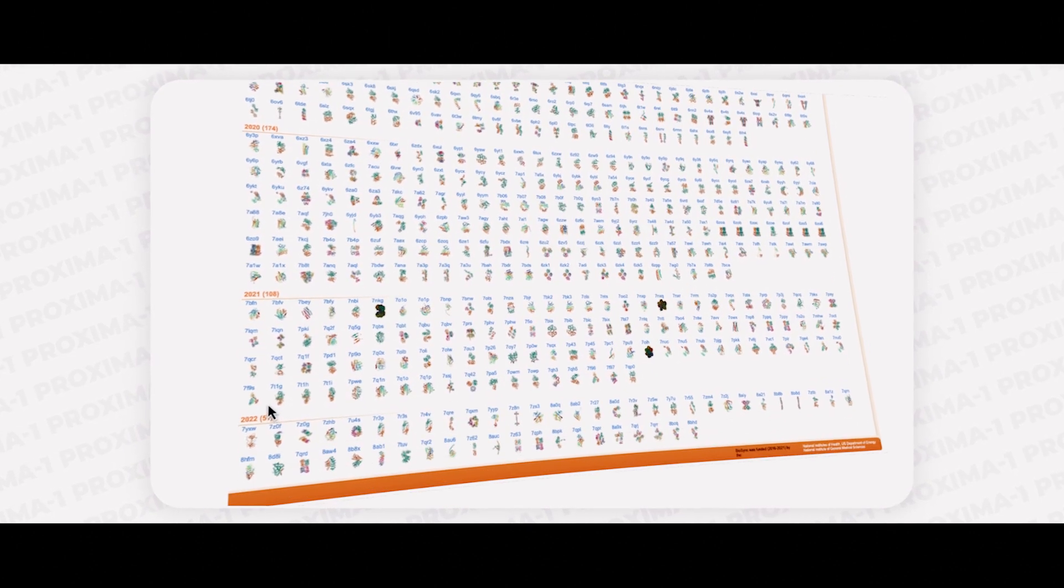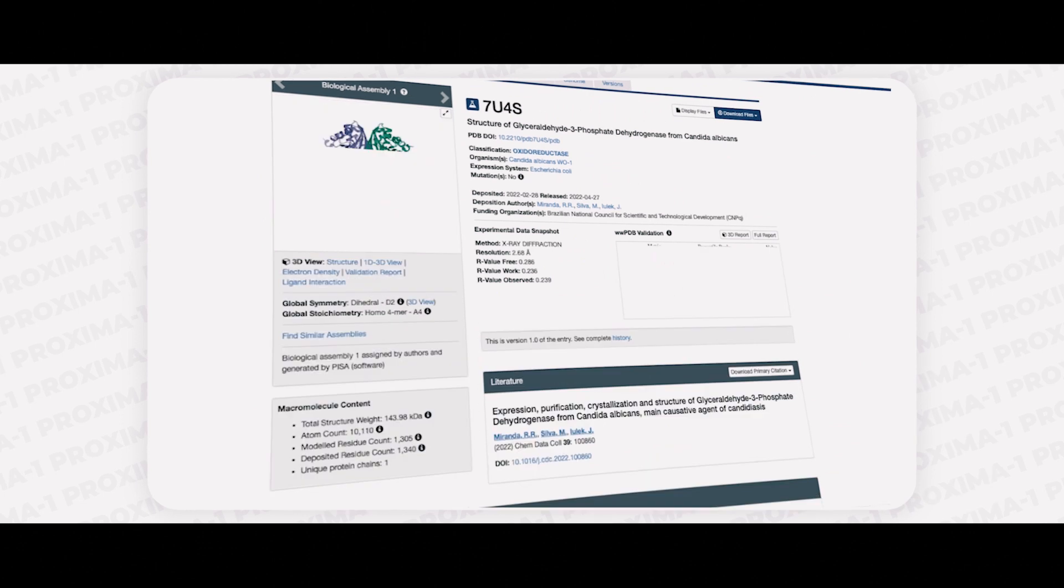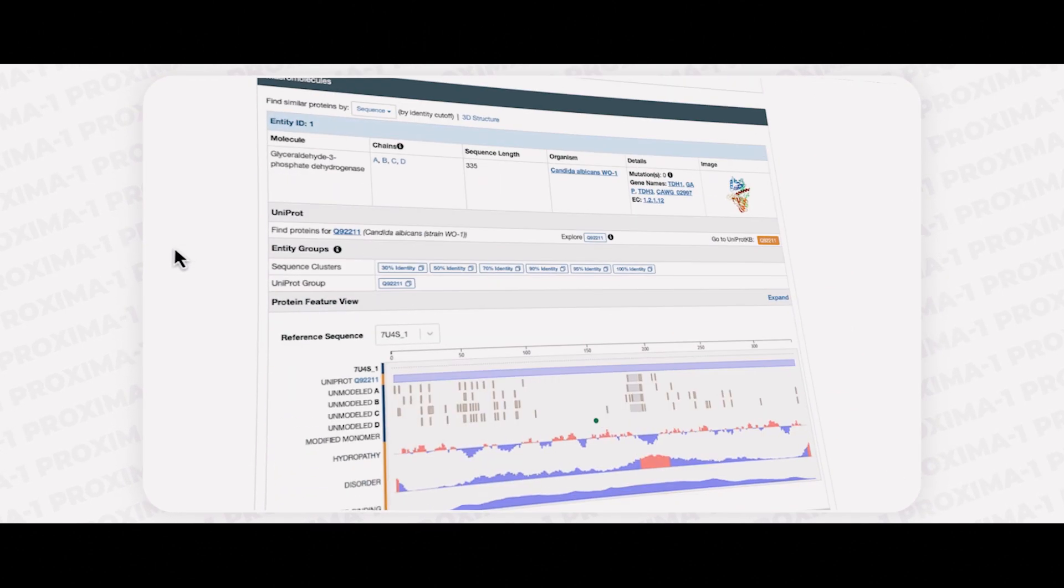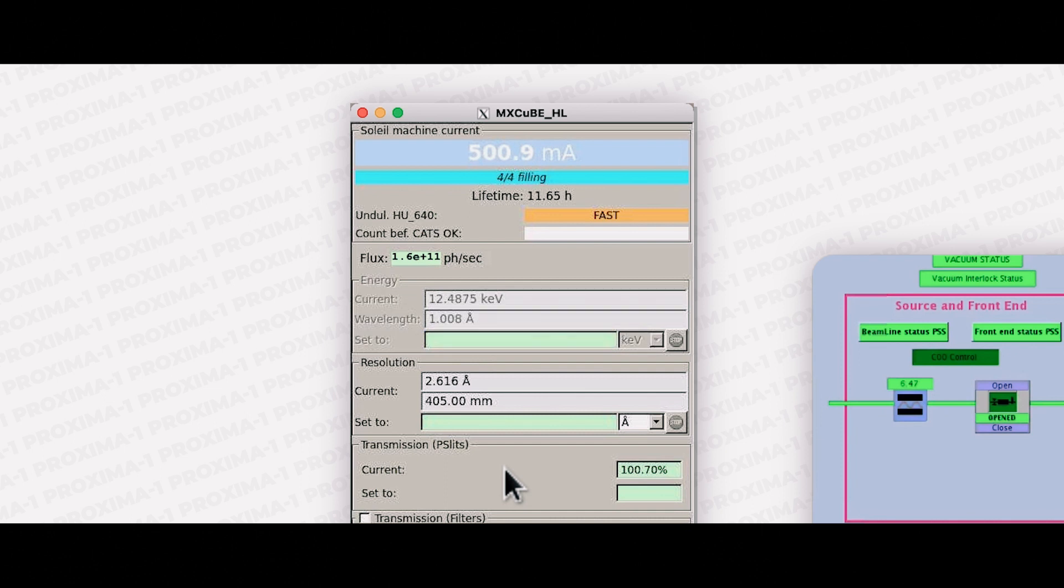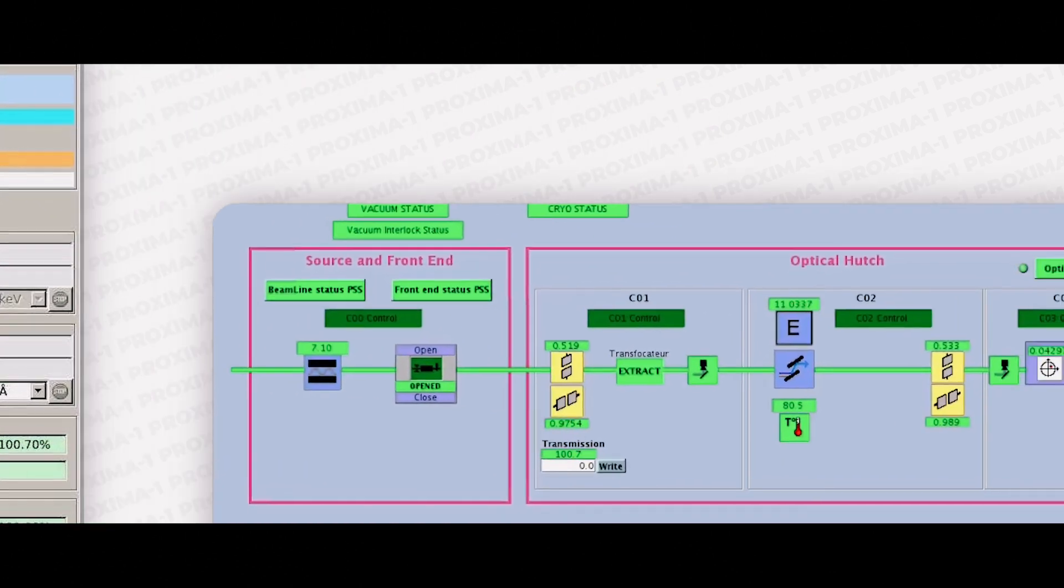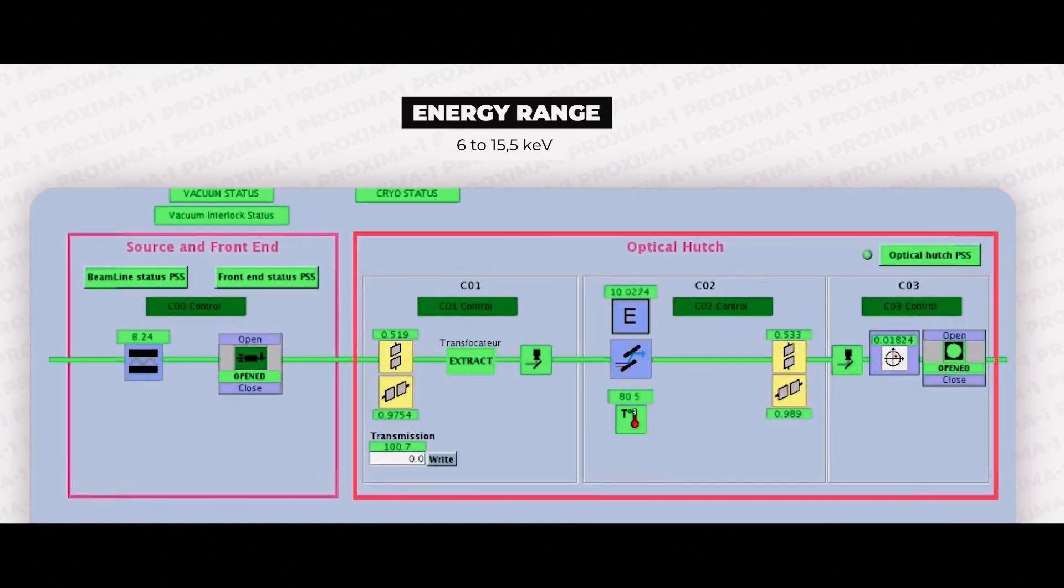Thanks to the very stable optics and to Soleil's storage ring which, when combined, allow a world-class stability and high-flux X-ray beam. A cryogenically cooled silicon monochromator allows the energy to be quickly changed between the 6 and 15.5 kiloelectron volt range.